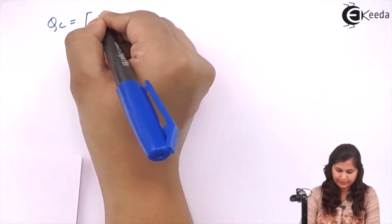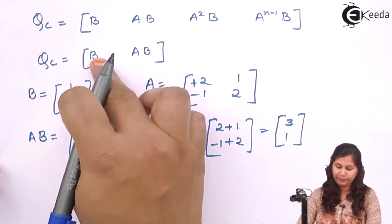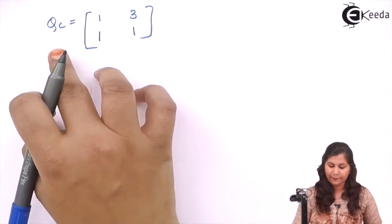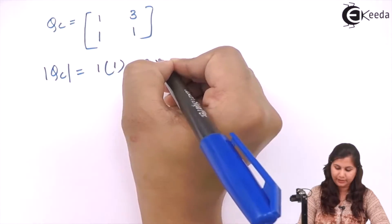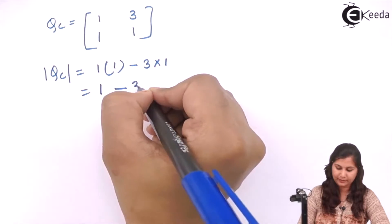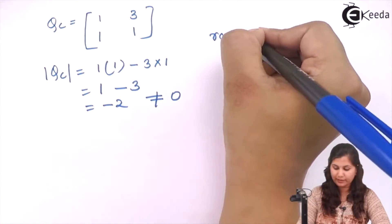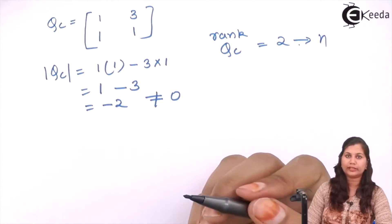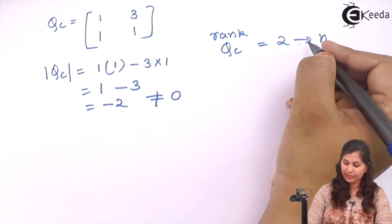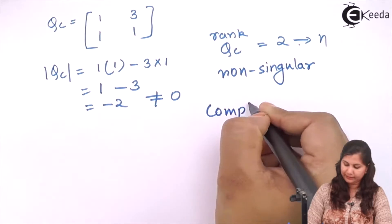The controllability matrix QC becomes [B | AB], which is [1, 3; 1, 1]. Now we calculate the determinant of QC: 1×1 minus 3×1 = 1 - 3 = -2. So it is not equal to 0, meaning the rank of QC is 2, equal to the number of state variables. The matrix is non-singular, so the system is completely controllable.